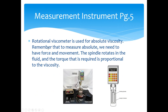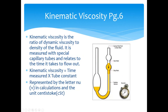Kinematic viscosity is the ratio of dynamic viscosity to the density of the fluid. It's measured with special capillary tubes — Ostwald tubes — and relates to the time it takes for the fluid to flow out. We fill a particular volume chamber with the fluid, allow it to drain through a restriction, and measure the time. That time multiplied by the tube constant gives us the kinematic viscosity measurement. Kinematic viscosity is represented by the symbol nu (ν), and its units are the stoke or centistoke.